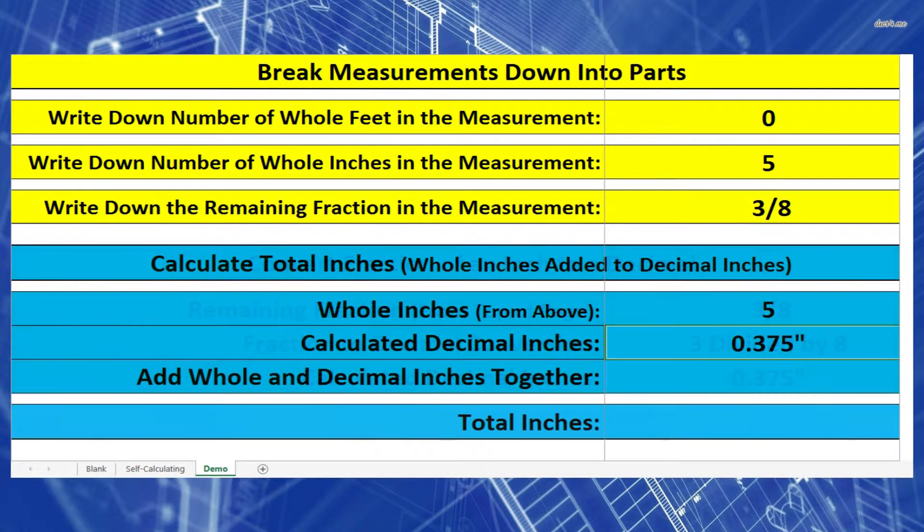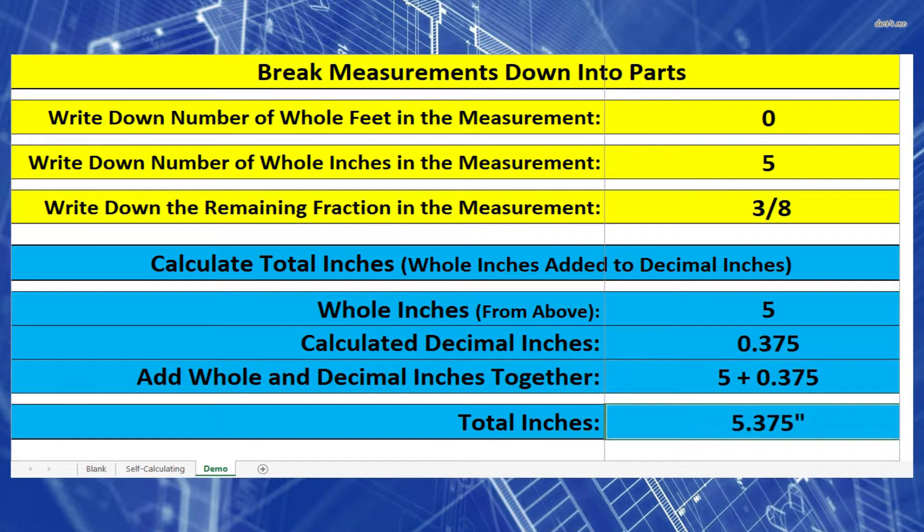The next step is fairly easy. We just take our whole inches and add it to our decimal inches. We should get 5.375 inches. And that's our answer.